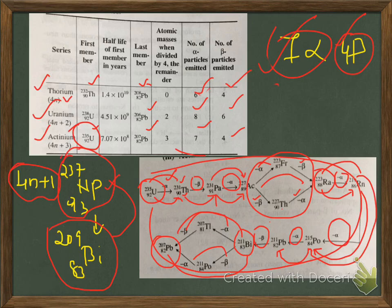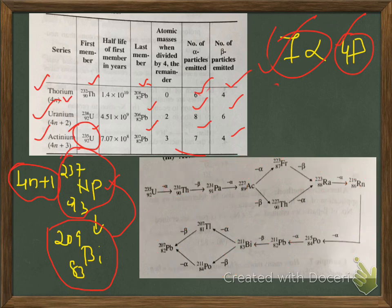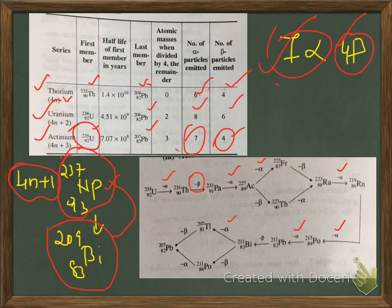You do not need to memorize all these elements — this is just for an example. Here, 7 alpha and 4 beta particles are emitted; you can count the alpha and beta particles in this picture. Counting the alpha particles: 1 alpha, 2 alpha, 3 alpha, 4 alpha, 5 alpha, 6 alpha, 7 alpha — that is 7 alpha. Now for the beta particles: first beta, second beta, third beta, and fourth beta — that is 4 beta particles.